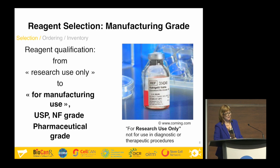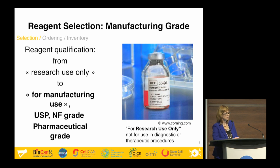This leads to my first example: reagent selection. When you made your first doses of your new cell product or biologic, you most certainly used reagents declared for research use only — not for diagnostics and not for therapeutic procedures. Therefore, you cannot simply use them in the production of a product that will be injected or otherwise delivered to humans. You have to change the grade of your reagent and upgrade to manufacturing-use products.